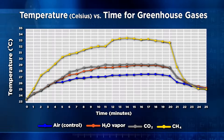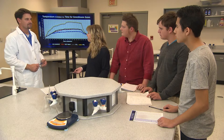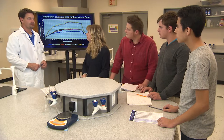The methane got hotter than the other gases — it must absorb the heat better. And the plain air, the control, was the least of all the gases. Carbon dioxide and water vapor heat up the same amount. I wonder why I hear so much on the news about carbon dioxide when methane actually heats up the air more than carbon dioxide does.